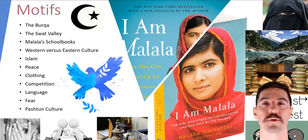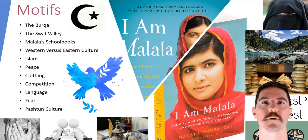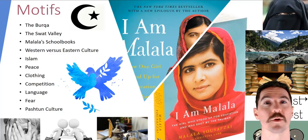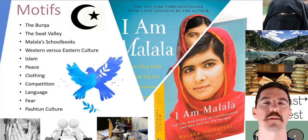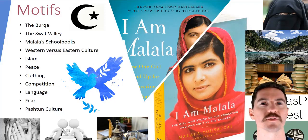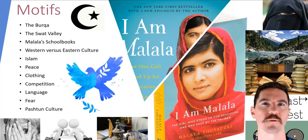The motifs run throughout the book consistently. The burka is a motif — she sees it as oppression at certain points, but it also represents many different things to different people. You'll explore how that motif is positioned within the story by her and also by the culture she is part of. The Swat Valley represents a whole range of things to her: safety, danger, coming home, returning, nature's beauty — they're all linked into her views of the Swat Valley.